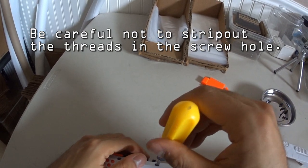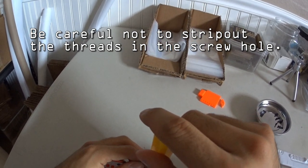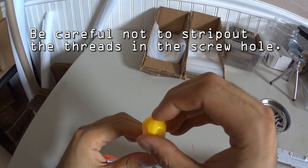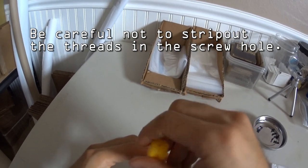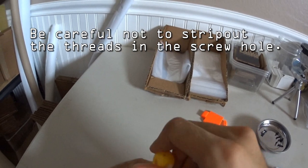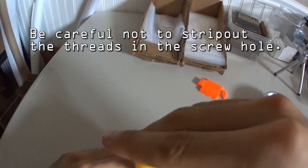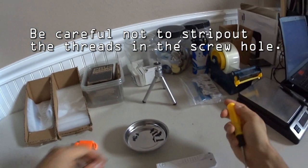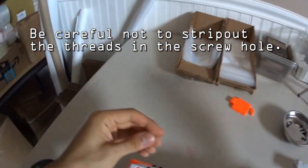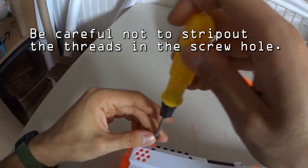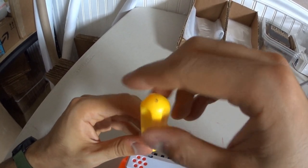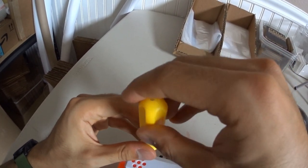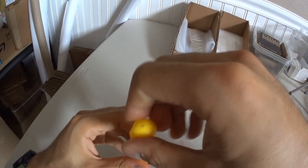What you want to do is you want to first go counter clockwise. Gently. And then you'll feel it click. And then start turning clockwise. What that's doing is you're catching the threads that are already there from before. So that you don't strip out the plastic threading. That'll make your blaster last longer.